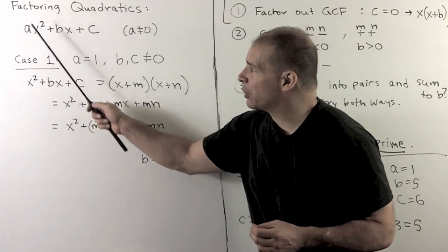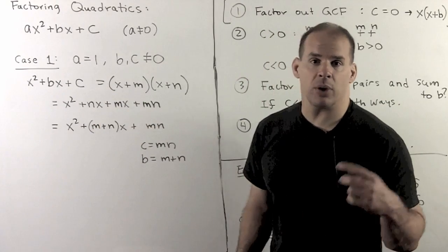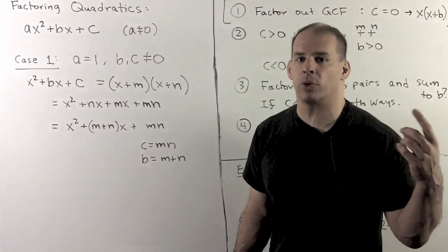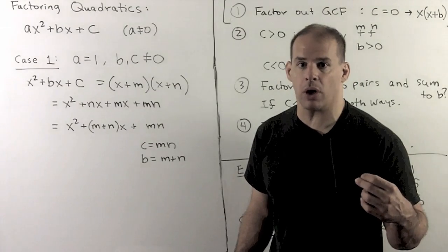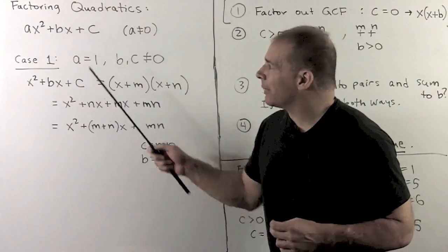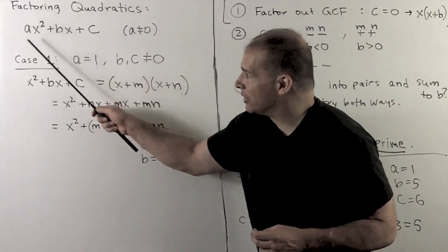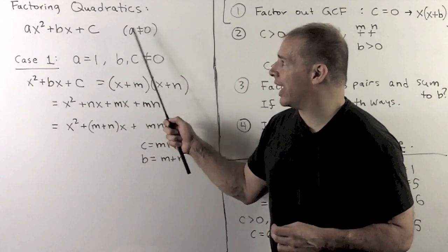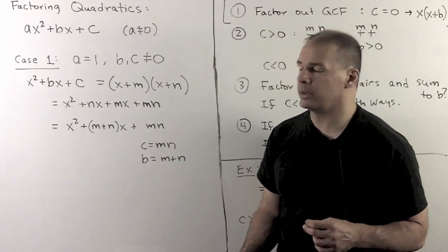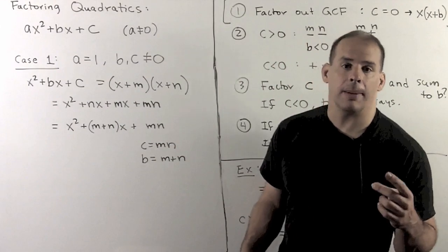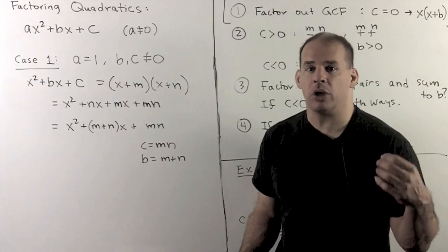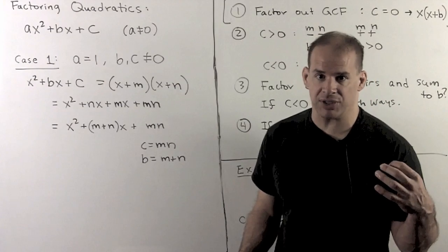The highest exponent is going to be 2, so we have square terms but no cubes, fourth powers, and so on. For this to be a quadratic, I have to have the square term, so we also insist on a being non-zero. Now, we'll have two techniques, and then in the next part we'll look at special cases.